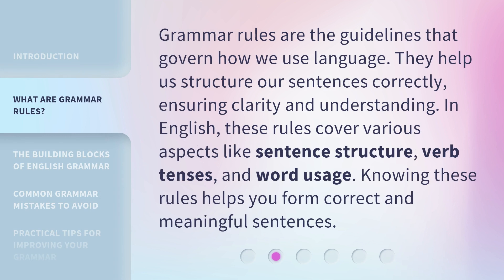Grammar rules are the guidelines that govern how we use language. They help us structure our sentences correctly, ensuring clarity and understanding. In English, these rules cover various aspects like sentence structure, verb tenses, and word usage. Knowing these rules helps you form correct and meaningful sentences.